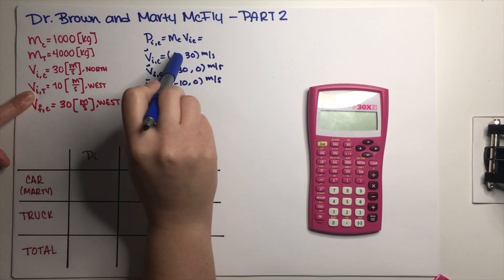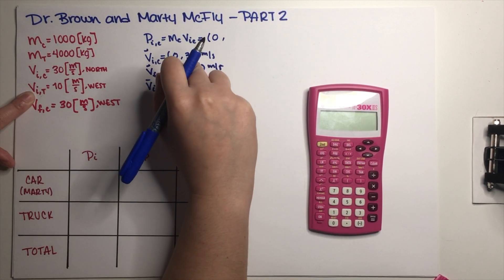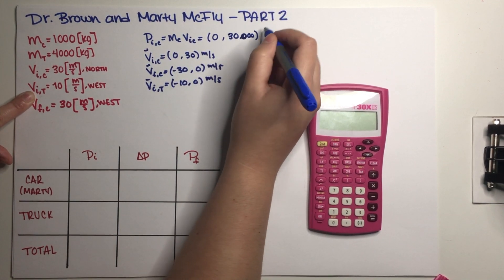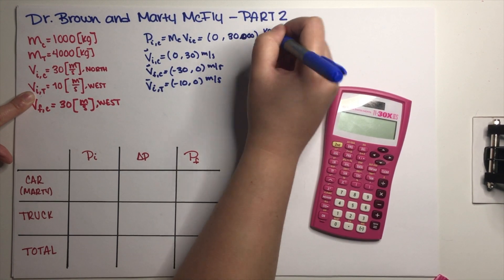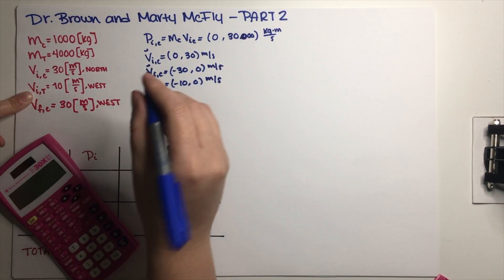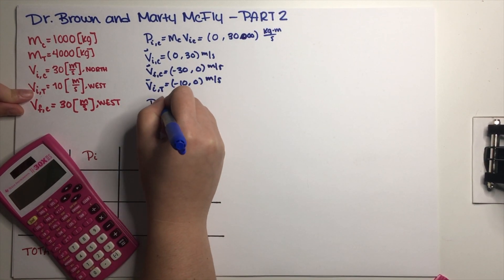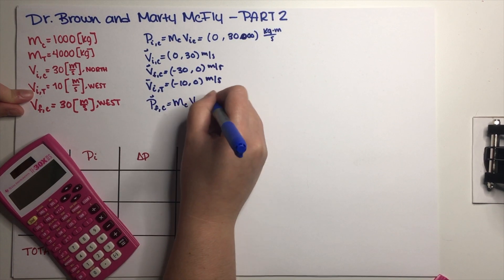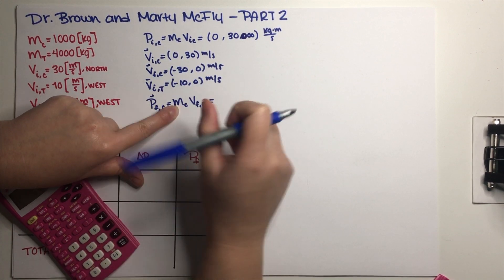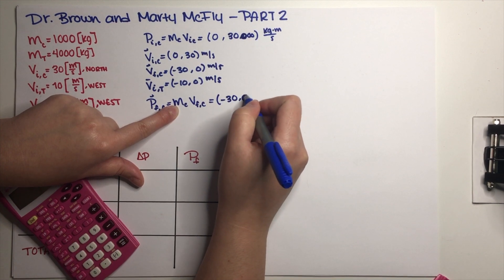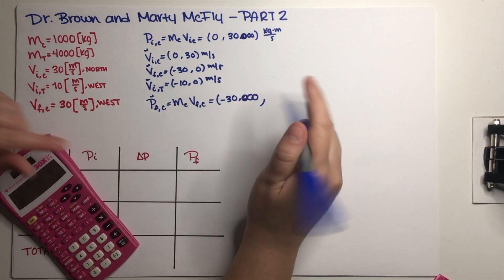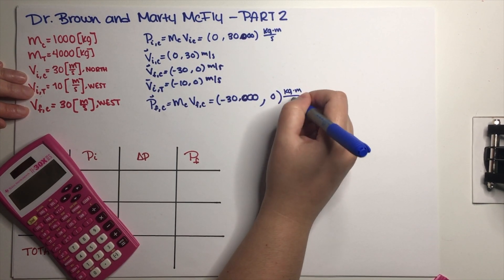Now I'll multiply mass by velocity. For the car's initial momentum: 1000 × 0 = 0, and 1000 × 30 = 30,000 kg·m/s. For the car's final momentum: 1000 × (−30) = −30,000 on the x-axis, and 1000 × 0 = 0 on the y-axis — so (−30,000, 0) kg·m/s.